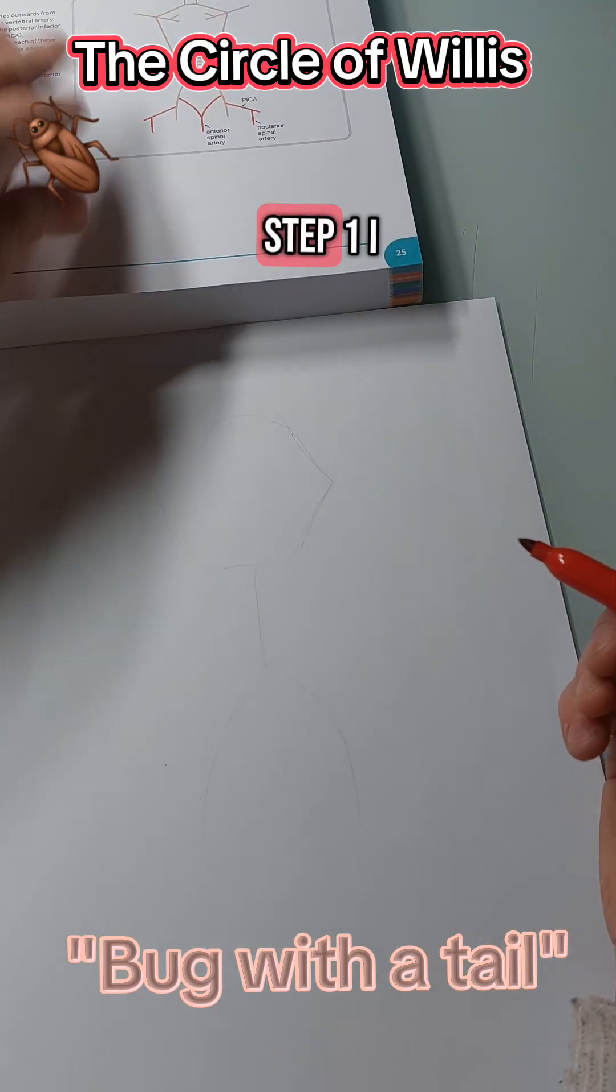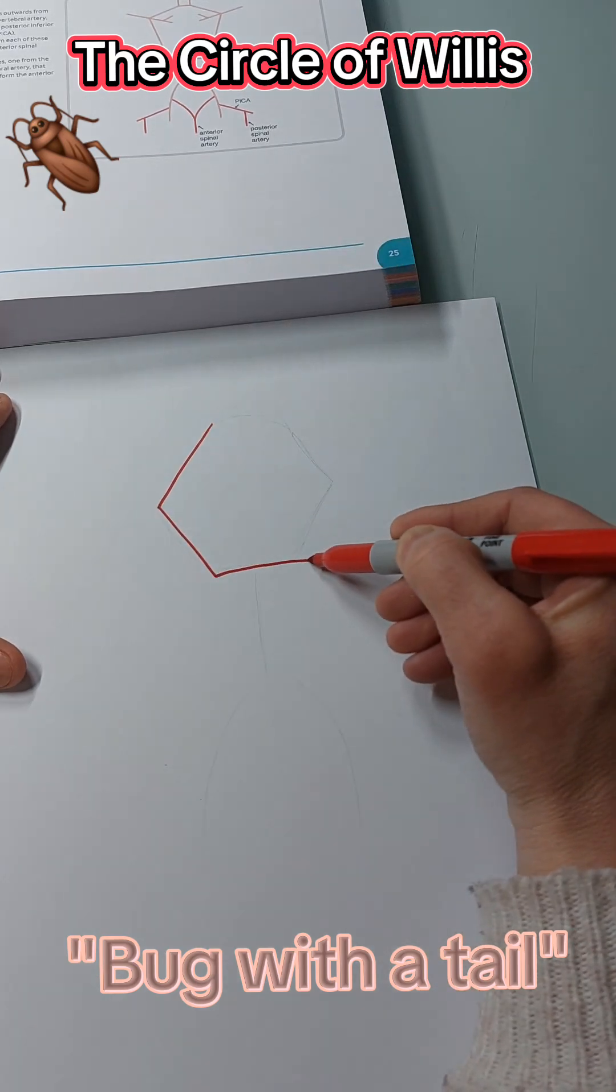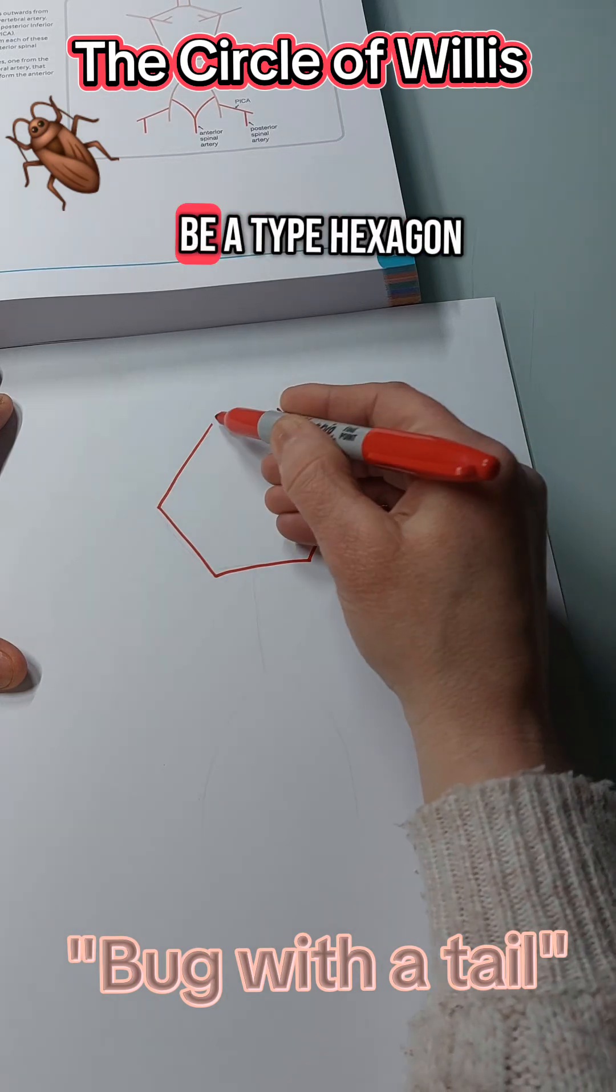Well, step one, I start by drawing a hexagon. It doesn't have to be perfect, just has to be a type of hexagon.